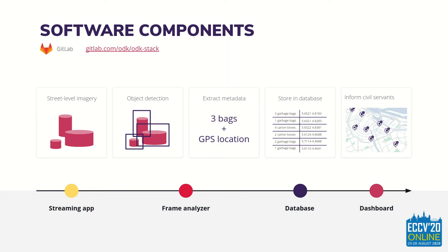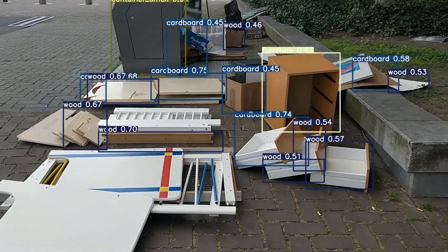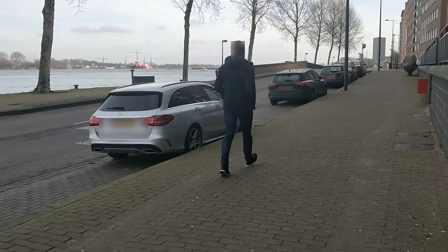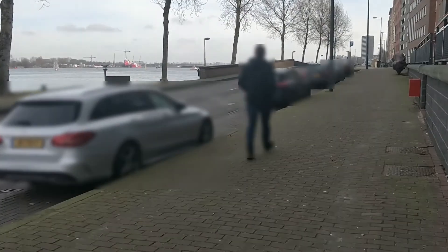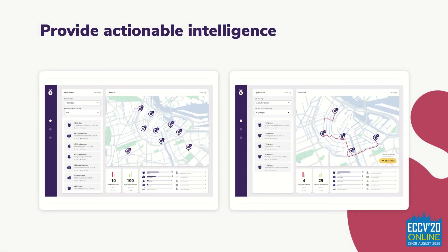The framework consists of a progressive web app, a server that distributes the images over several machine learning workers, and a dashboard that gives actionable intelligence to the local government. The web app works by simply activating it and starting to scan — it can be attached to any vehicle. The distribution server distributes the streams over a number of machine learning workers, performing object detection to discover urban objects, and at the same time filtering out any privacy-sensitive information such as license plates and faces. This data is stored and presented to civil servants through a dashboard, allowing them to work more efficiently.